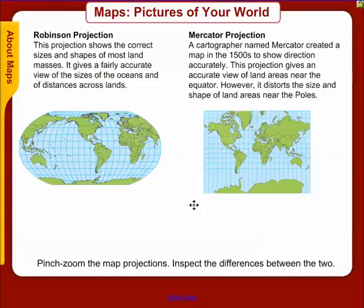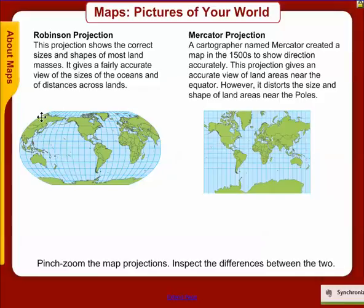Here are the two most common different types of maps that we have around us. You're either going to encounter a Robinson projection, which has more correct sizes and shapes of the land masses. It gives the spherical shape of our world a fairly accurate view of the sizes of the oceans and the distances across lands.